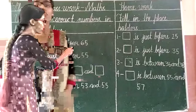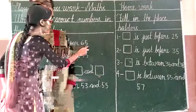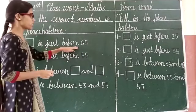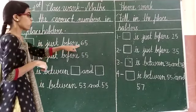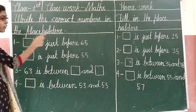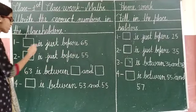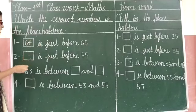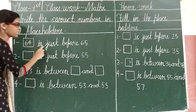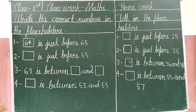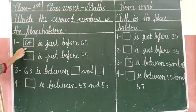It's just before 65. 65 is the unit. What is the unit just before 65? 64. 64 is just before 65. 64, 65 is the unit.